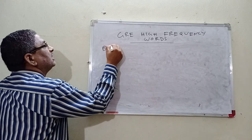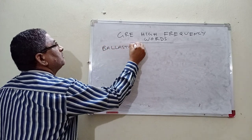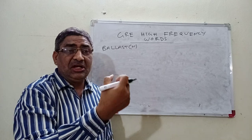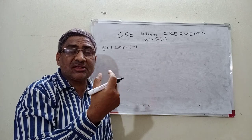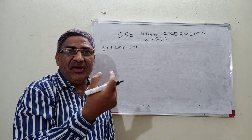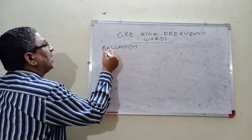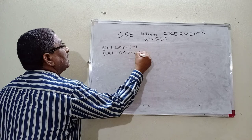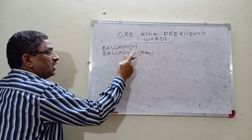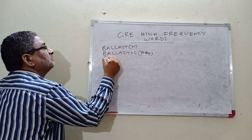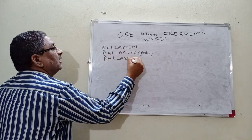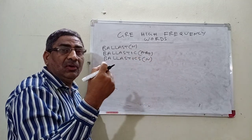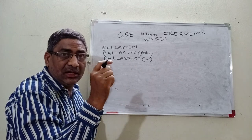Ballast — what is the meaning of ballast? A heavy substance that is used to increase weight and stability. The adjective form ballastic means maintaining the balance. Ballistics is a branch of science which mainly deals with the study of missiles.